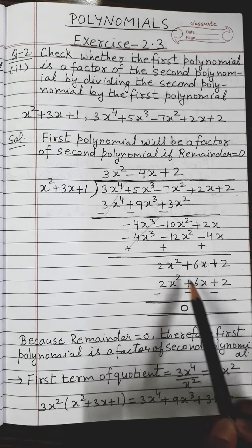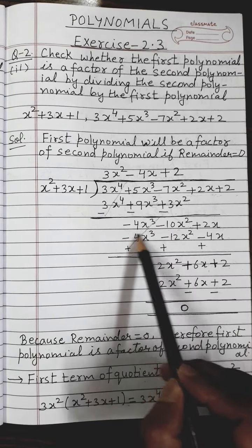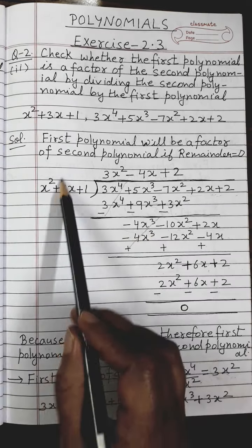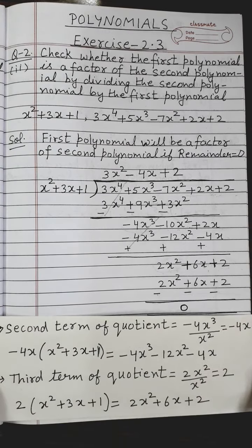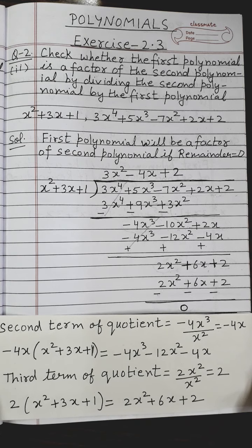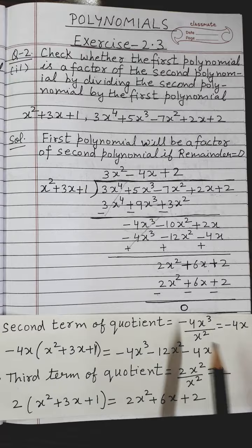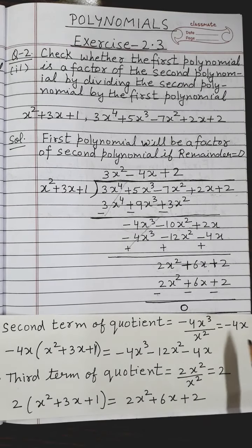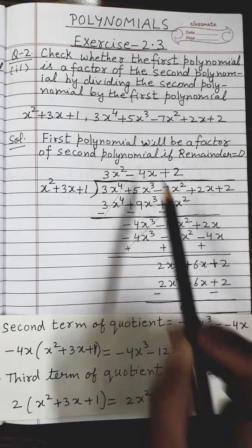Now I obtain the second quotient term using the same process. I take the first term of the new dividend, -4x³, and divide by the first term of the divisor: -4x³ ÷ x² = -4x. So -4x is the second term of the quotient, and I write -4x on the quotient side.